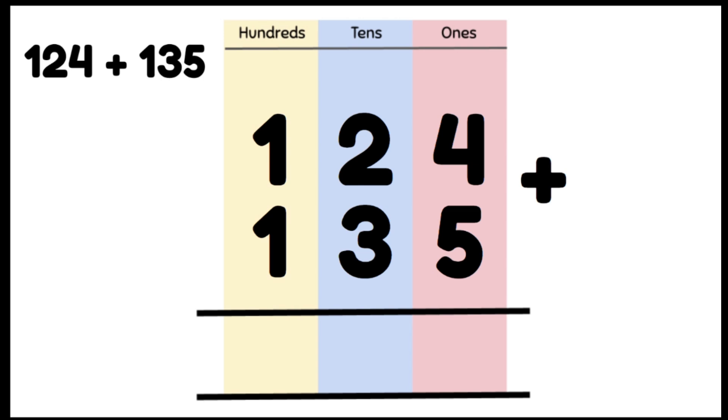We're going to add our ones column first, 4 plus 5. That gives us 9 and we're going to write the answer right below in the ones column. Now we're going to add our tens, 2 tens plus 3 tens. That gives us 5 tens and we're going to write that in our tens column. Lastly, we're going to add our hundreds, 100 plus 100 gives us 2 hundreds.